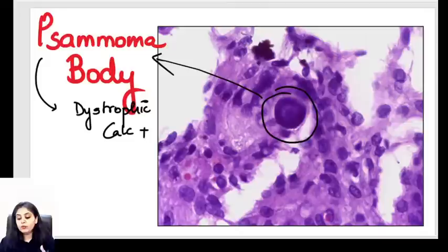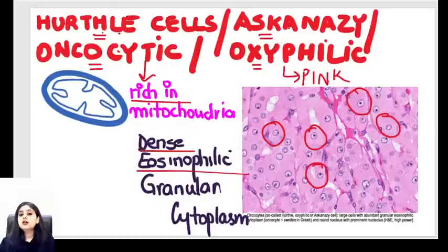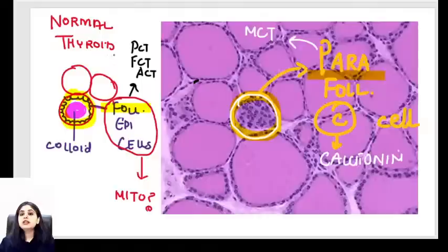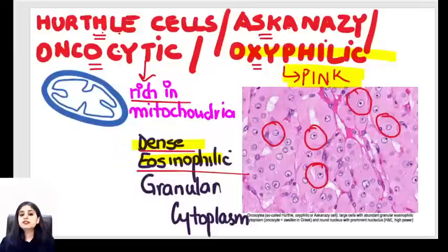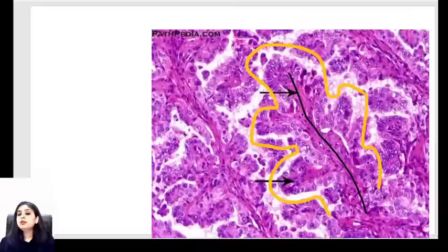Hürthle cells are also known as oxyphilic cells — always very pink and dense. Compared to normal thyroid cells which are small, a Hürthle cell looks extremely big and pink. So remember: big and pink cell in the thyroid is going to be the Hürthle cell. For papillary carcinoma, the gross finding is just a solitary nodule — cancers are always diagnosed on microscopic appearance, not gross.